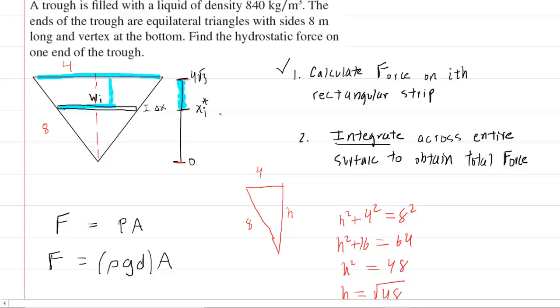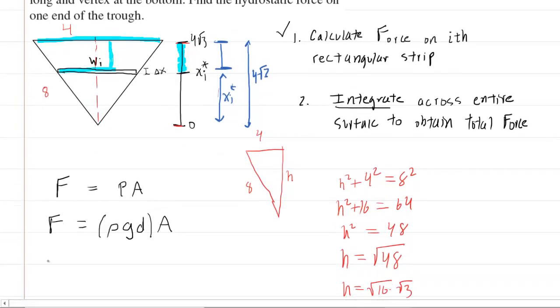We can see from the scale that since from here to here is the x i star, and from here to here is four radical three, then this dimension right here would have to be the longer segment of four radical three minus the shorter segment of x sub i star. So in other words, for the depth, that little d in the equation, we're going to have the four radical three minus the x sub i star. So far, so good.